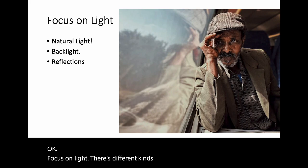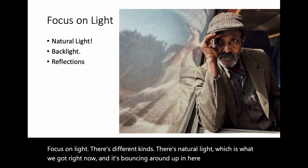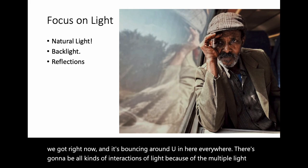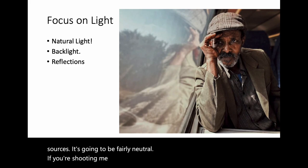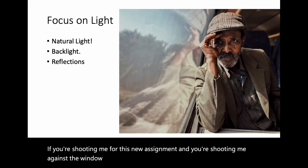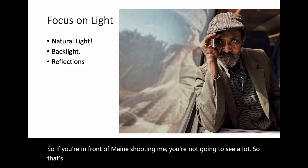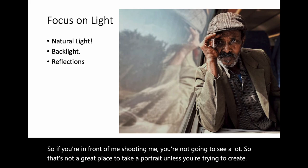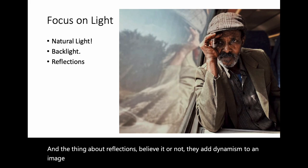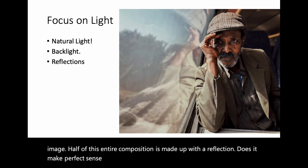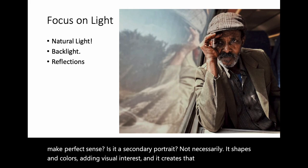Focus on light — there are different kinds. There's natural light bouncing around with interactions from multiple sources. If you're shooting someone against a window, you're going to lose a lot of detail — they'll be backlit. So in front of a window is not a great place for a portrait. Think about reflections too. They add dynamism to an image. Half of this composition is made up of a reflection — it's shapes and colors adding visual interest and creating perspective that leads the eye right to the subject.